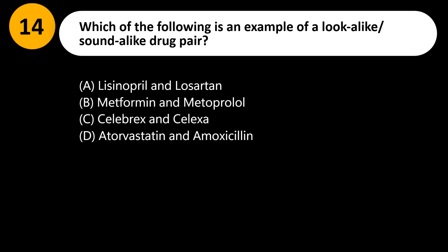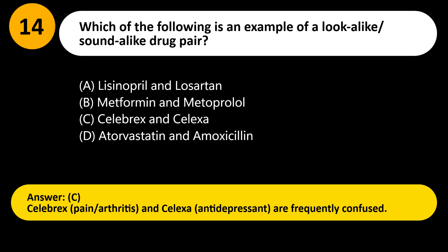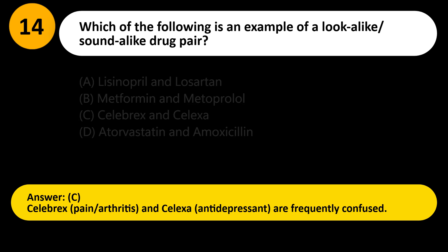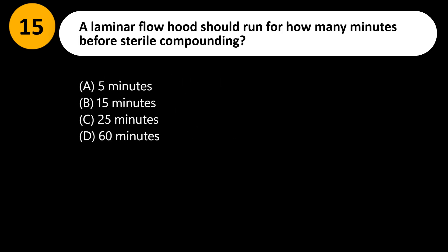Which of the following is an example of a look-alike/sound-alike drug pair? A) Lisinopril and losartan, B) Metformin and metoprolol, C) Celebrex and Celexa, D) Atorvastatin and amoxicillin. Answer: C. Celebrex (pain/arthritis) and Celexa (antidepressant) are frequently confused.